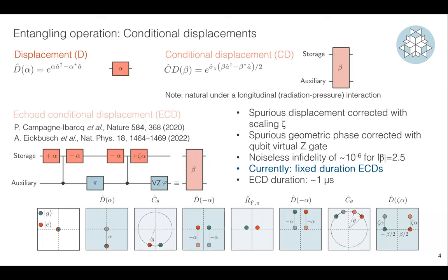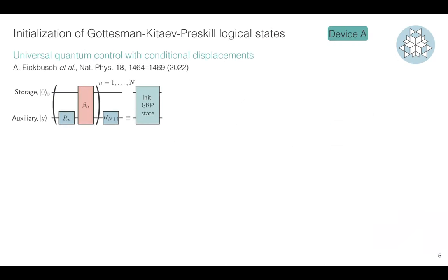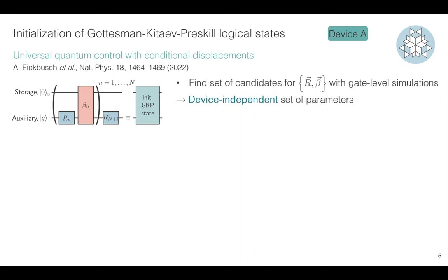Currently, all conditional displacements take about one microsecond, irrespective of the value of beta. People at Yale — Alec in particular — have shown that with conditional displacements and qubit rotations, you can build up a sequence that gives you universal control, and then you can create any state in the storage. The problem becomes how to find these parameters — the values of rotation and controlled displacement — which you can put into an optimizer to find candidates.